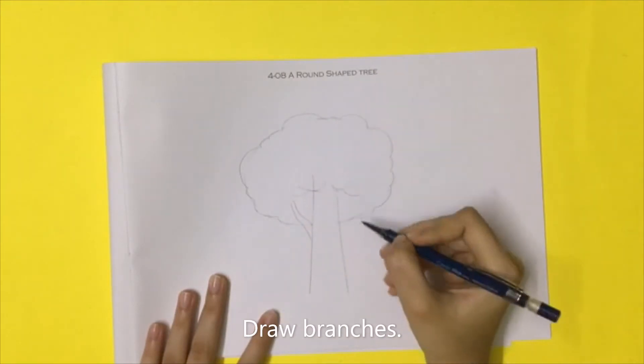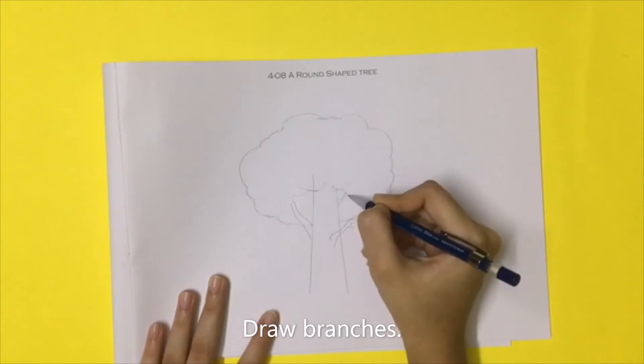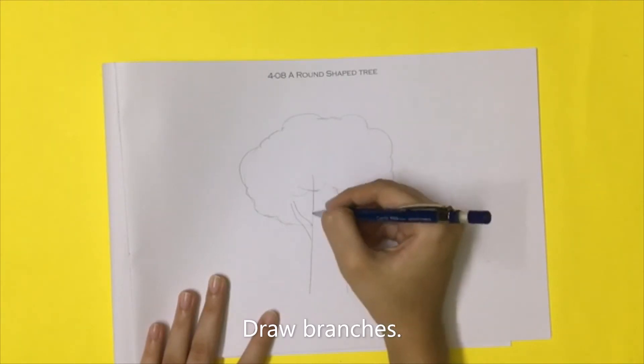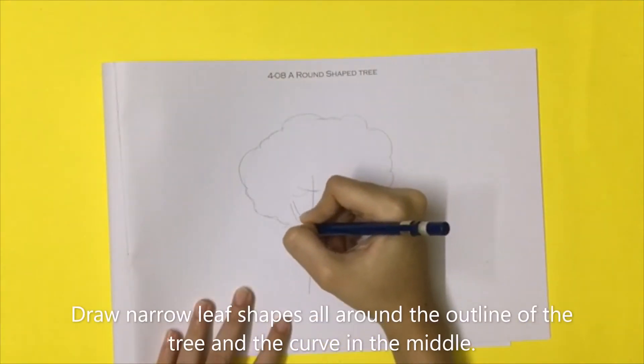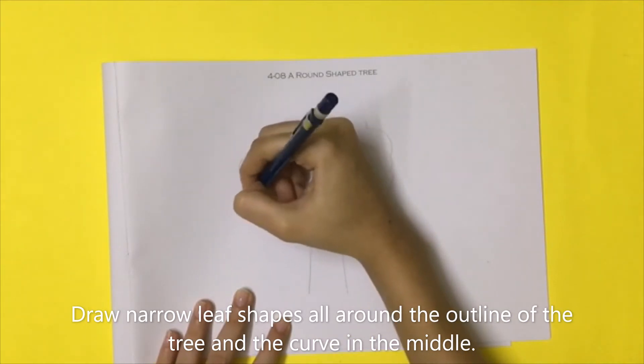Draw branches. Draw narrow leaf shapes all around the outline of the tree and the curve in the middle.